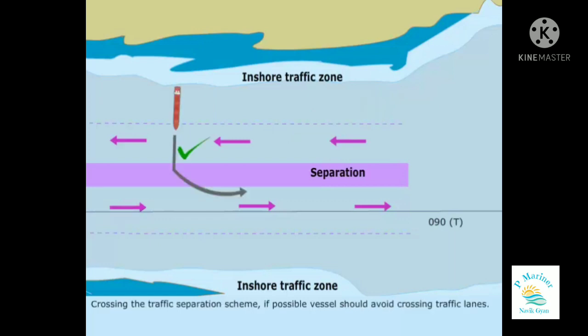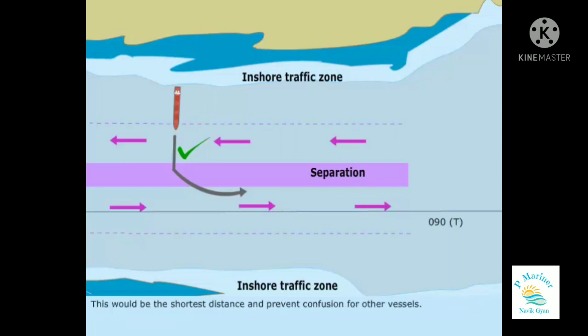When crossing the traffic separation scheme, if possible, the vessel should avoid crossing traffic lanes. If it cannot avoid crossing, then cross the traffic lane with a heading which is about 90 degrees to the traffic separation scheme. This would be the shortest distance and prevent confusion for other vessels.